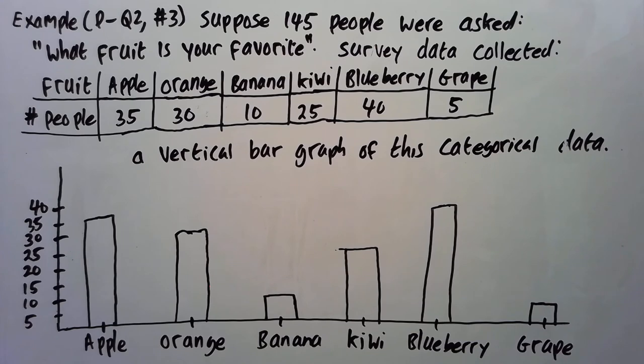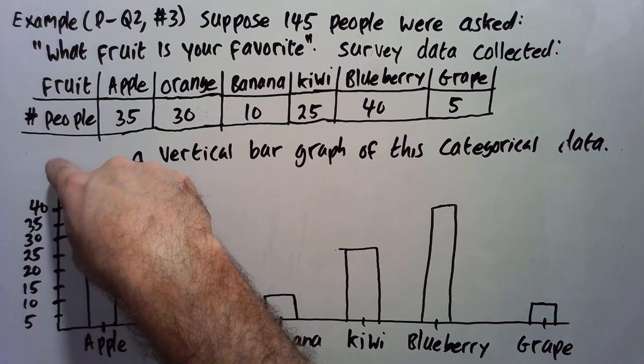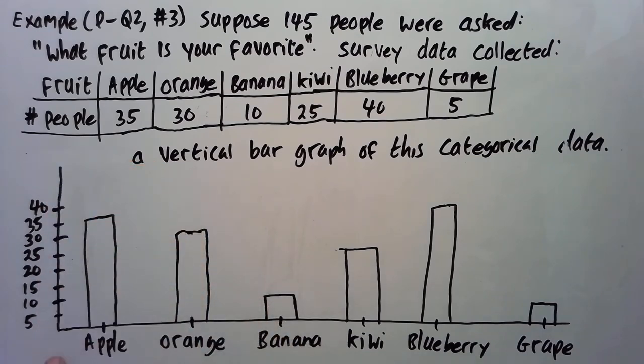We could also do a horizontal bar graph. So let me do that next, a horizontal one. So horizontal one, pretty much I just take this and turn it on its side. So I'd have the fruit names on the y-axis and the frequencies on the x-axis.